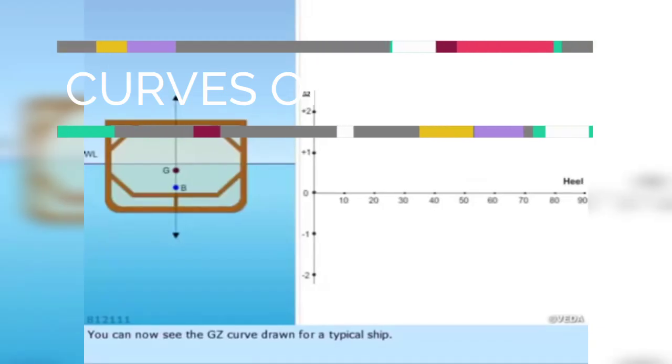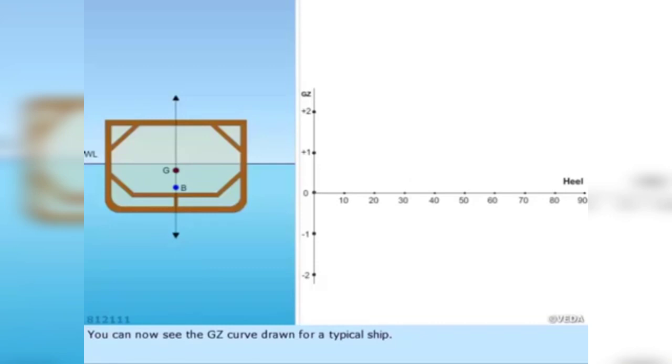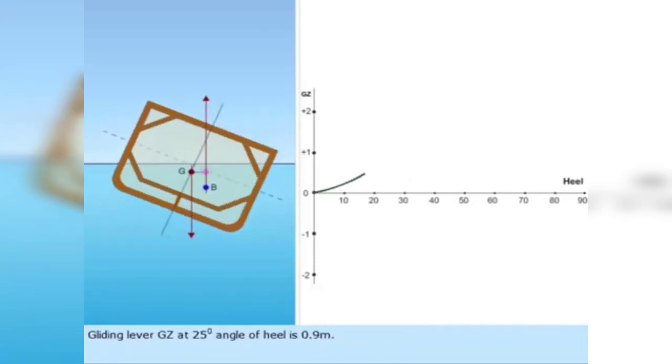You can now see the GZ curve drawn for a typical ship. Gliding lever GZ at 25 degree angle of heel is 0.9 meters.